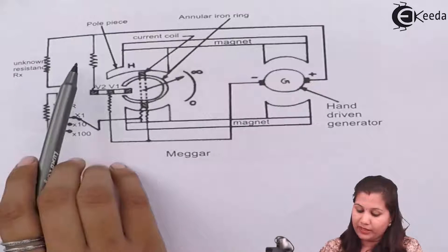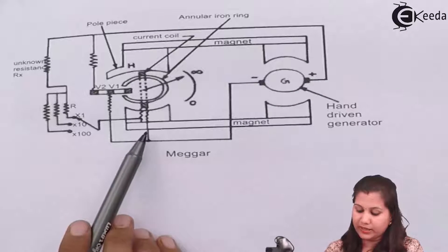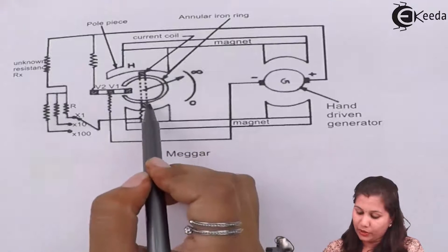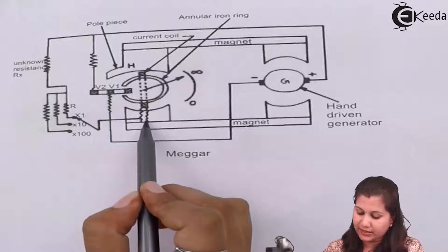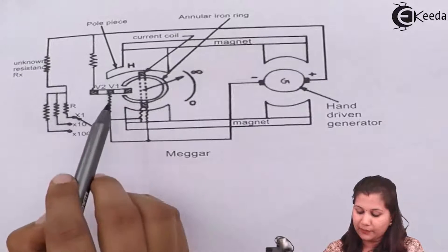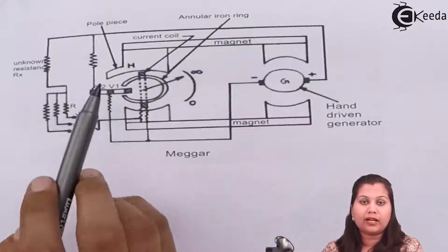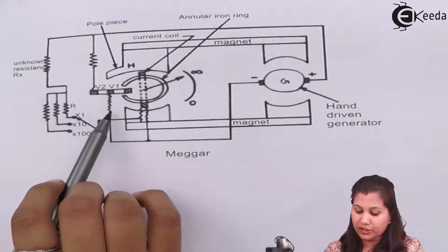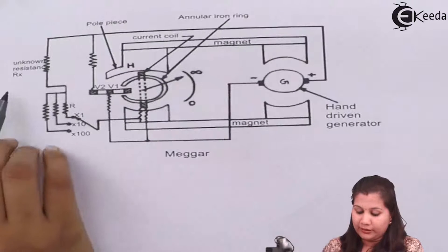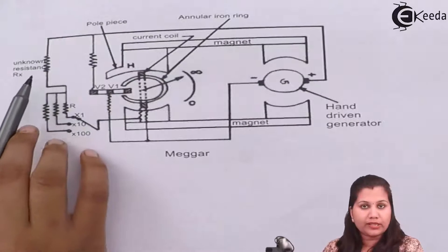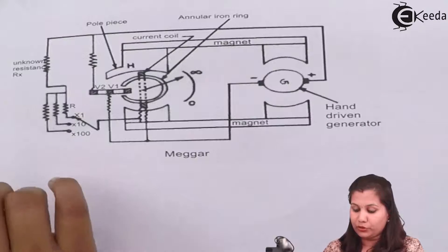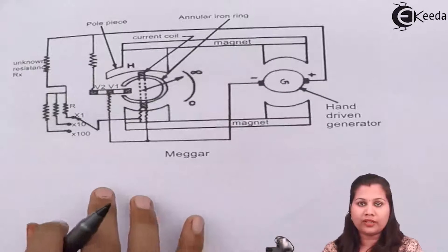We also have potential resistances and current resistances connected in the circuit. Through the potential coil and the current coil some resistances are connected. These resistances are connected to protect the instrument from any type of damage. RX is the unknown resistance or the high resistance which we want to measure.